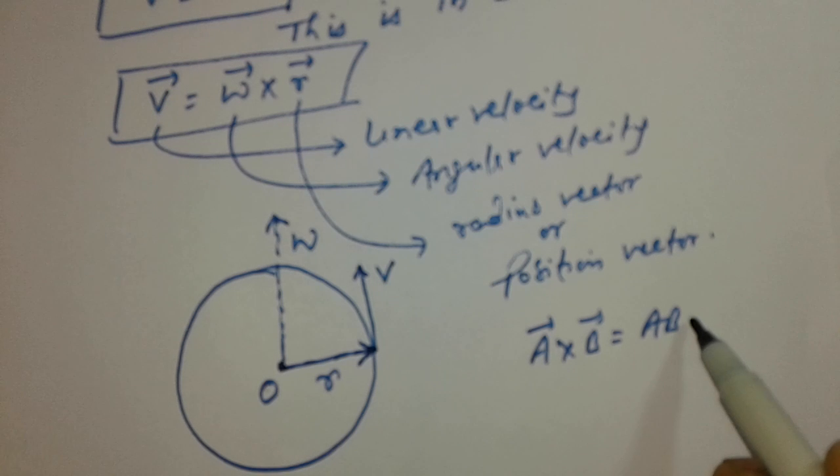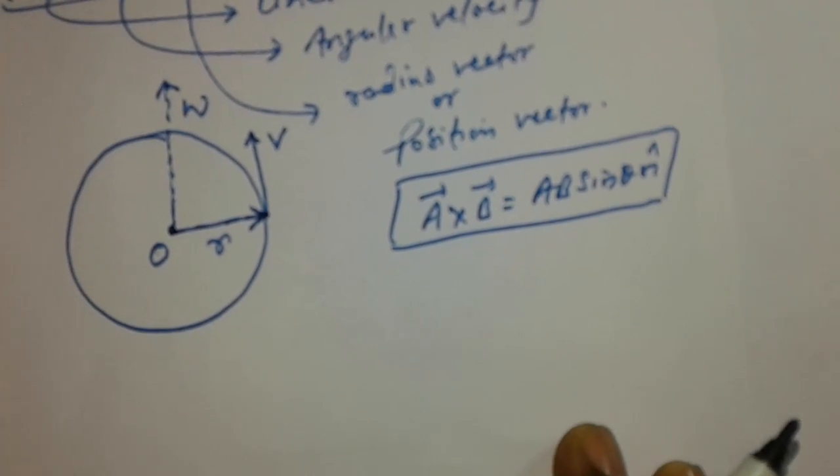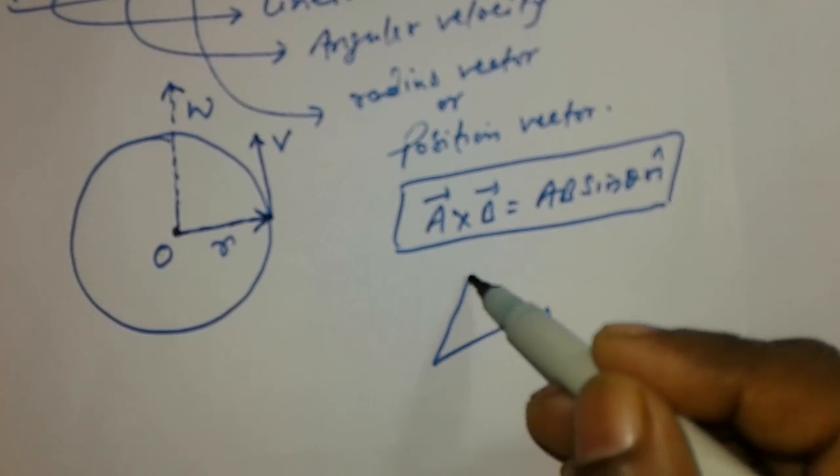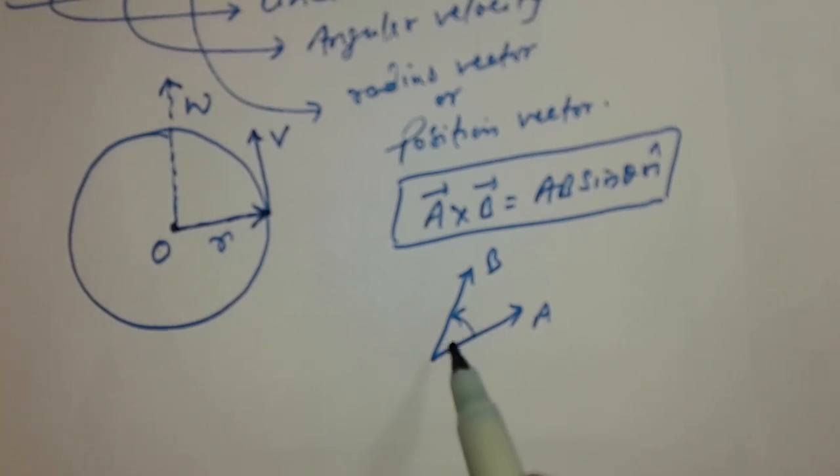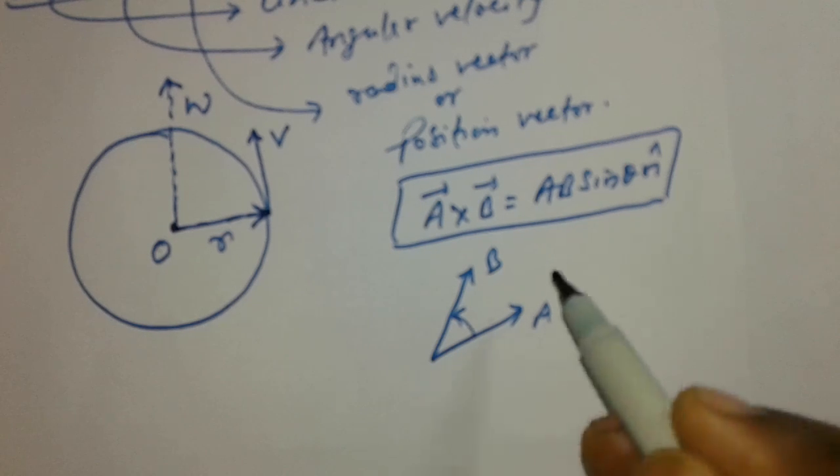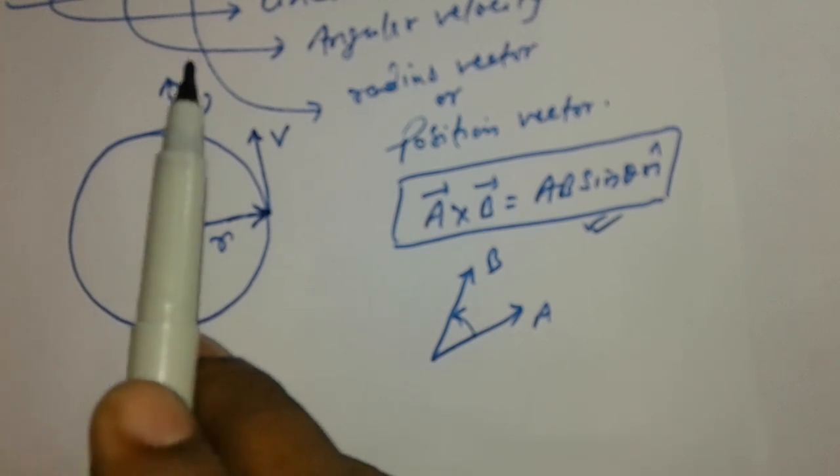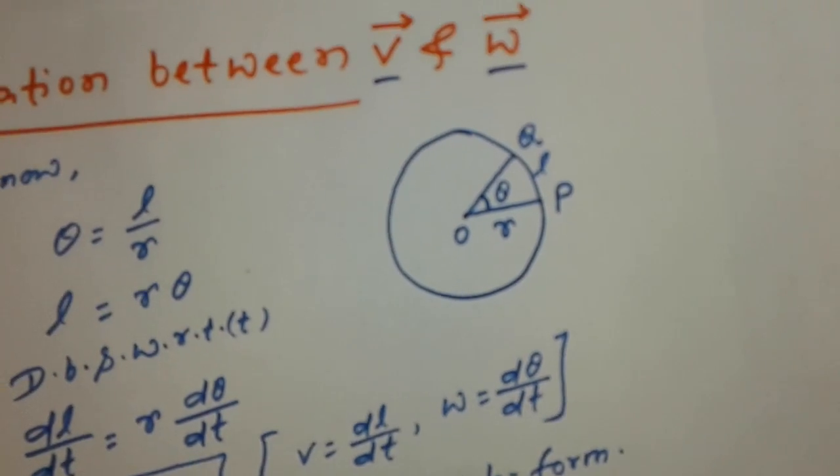We have already seen the direction of vector, that is cross product A cross B is equal to A B sin theta unit vector n. By this we can calculate the direction of product of two vectors. This is A and this is B, so direction of A cross B, that is upward or out of the plane, and B cross A is downward and into the plane. So with the help of cross product we can understand, and this is the relation between V and Omega.